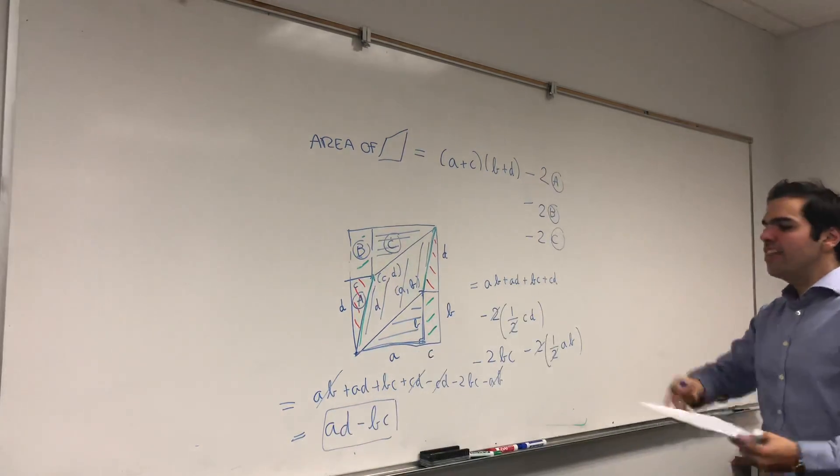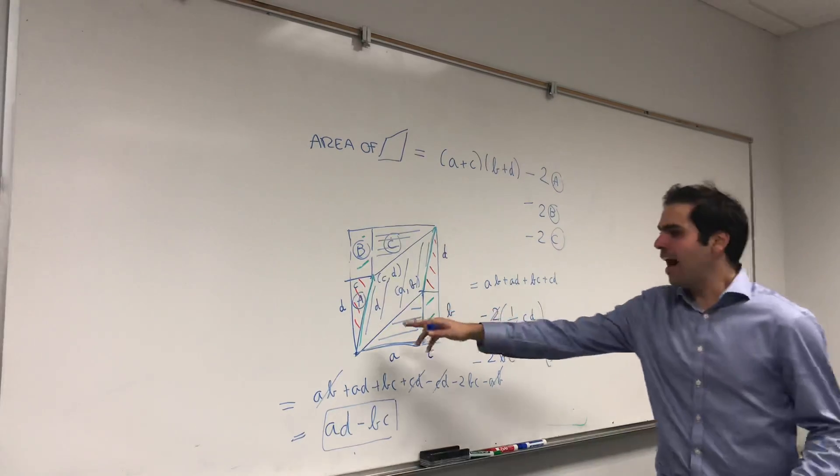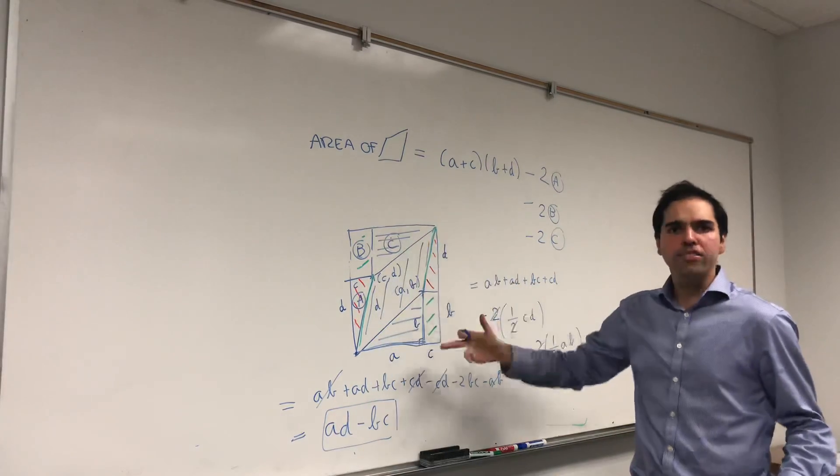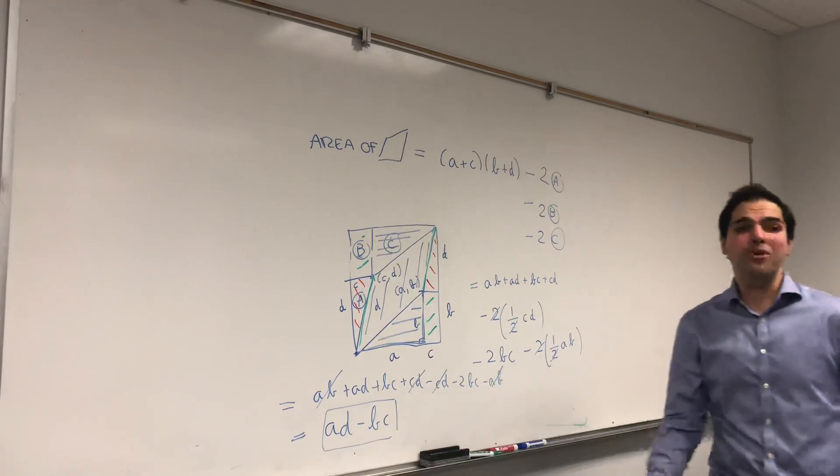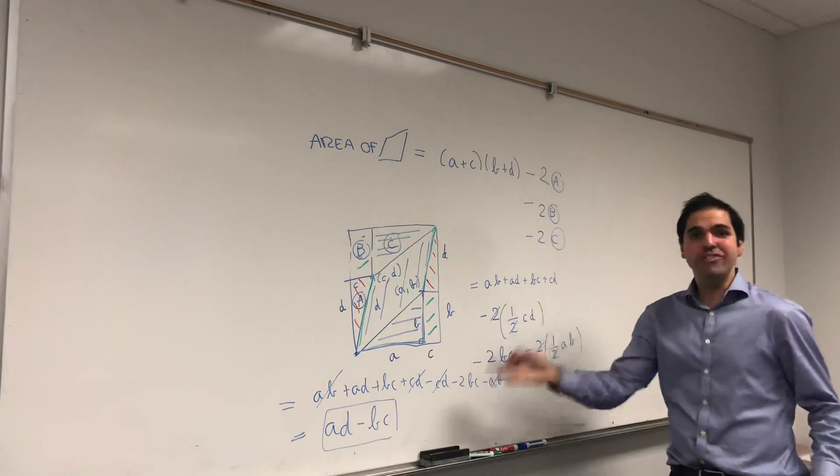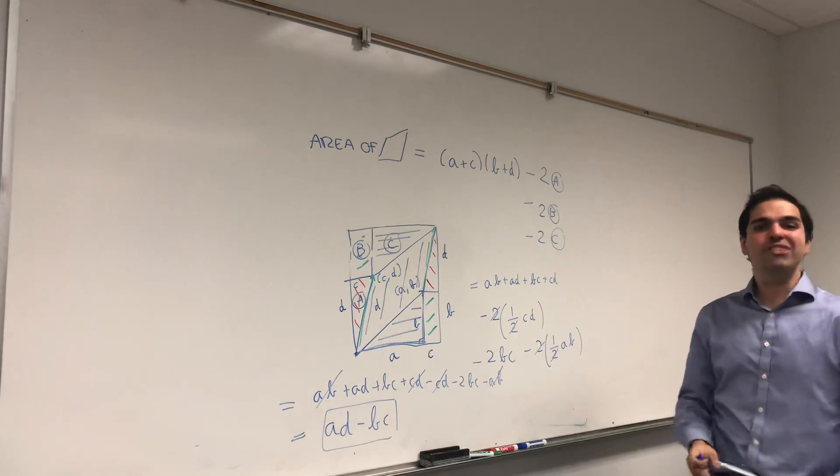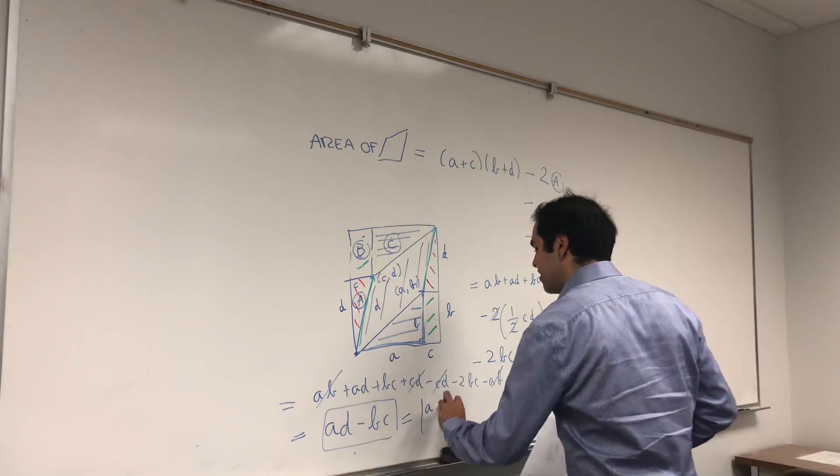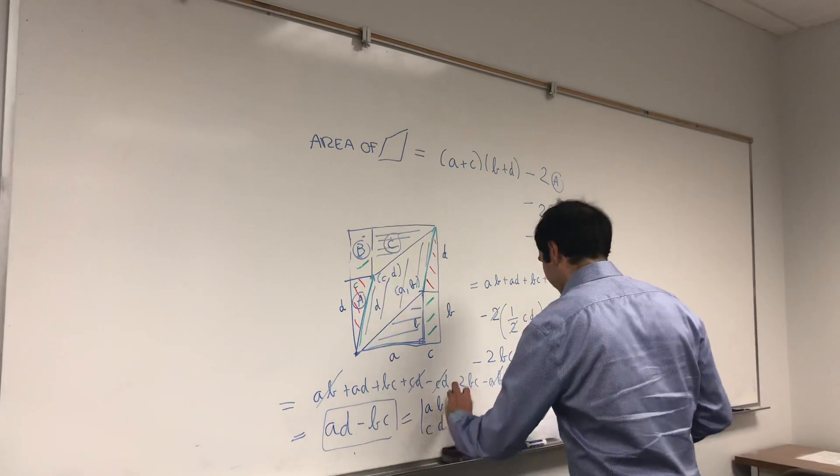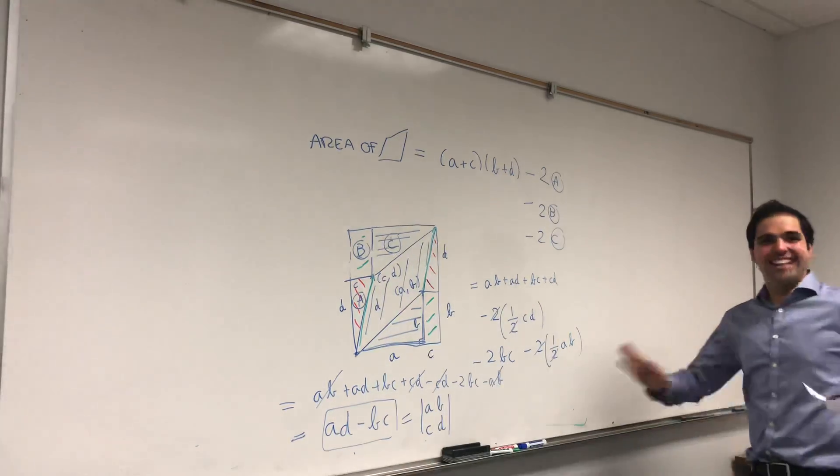So the area of a parallelogram, at least with this, what's called positive orientation, is in fact equal to the determinant. And this is where the definition of a two by two determinant comes from. We just get that it's ABCD. How cool is that? So you see why I was so excited about this video?